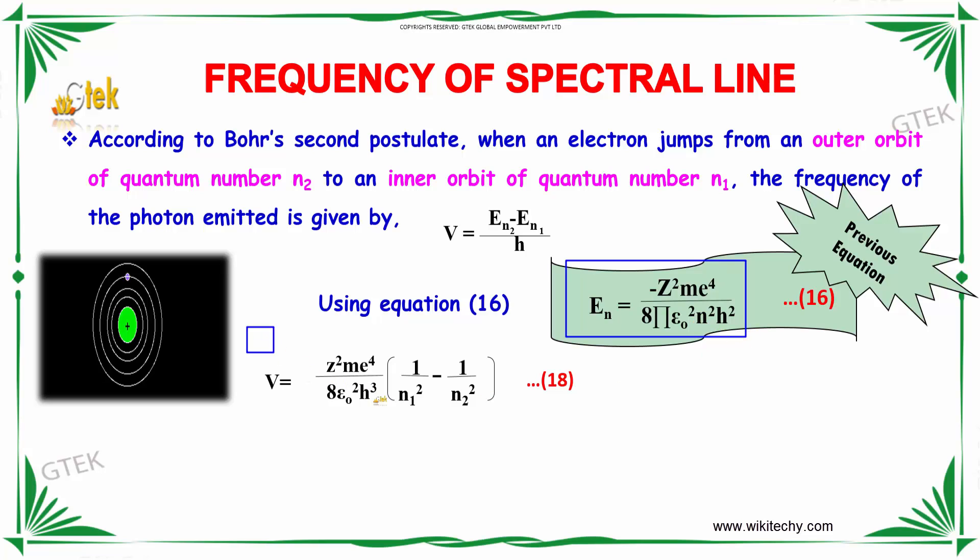Substituting this, the frequency of the photon emitted is ν = Z²me⁴/(8ε₀²h³) × (1/n₁² - 1/n₂²).